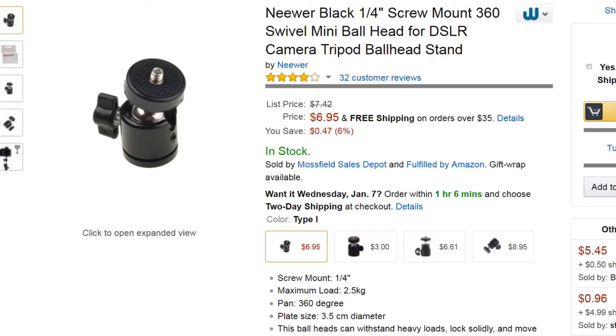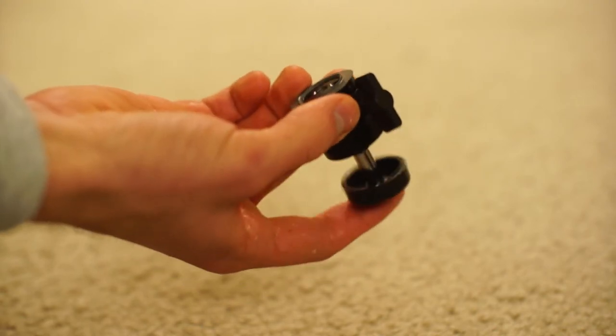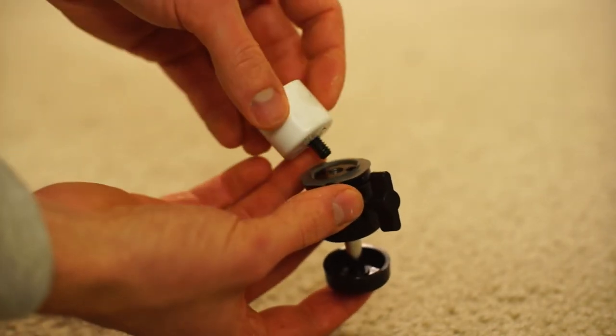Once the glue is cured, take a mini ball head, which can be found for $7 or less on Amazon, and screw it onto the bolt.